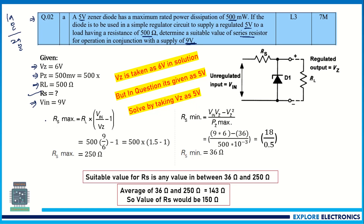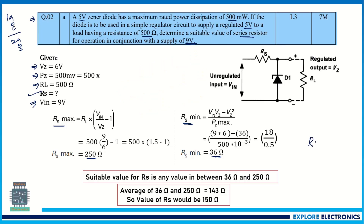To find Rs, use the formulas for Rs_maximum and Rs_minimum. The power dissipation, Vin, and Vz are given, so we can find both maximum and minimum values of Rs. The optimum value of Rs lies between Rs_minimum and Rs_maximum.